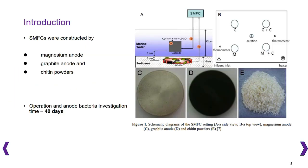Introduction. Here from figure 1a, we can see that SMAFC typically consists of a conductive anode such as a graphite embedded in an anaerobic sediment and a catalyst coated cathode made of a graphite plate or carbon fiber suspended in the overlying or oxygenated water.